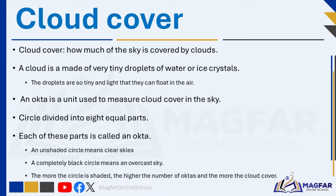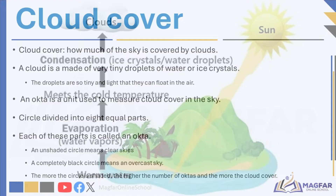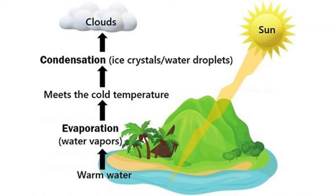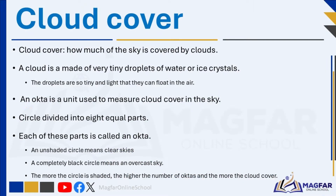All air contains water, but air closer to the ground is usually in the form of an invisible gas called water vapor. When this air gets warm, it rises. Cool air can't hold as much water vapor as warm air, so some of the vapor condenses — it turns into liquid and sticks onto tiny pieces of dust floating in the air, forming a tiny droplet around each dust particle. When billions of these droplets come together, they form a visible cloud.